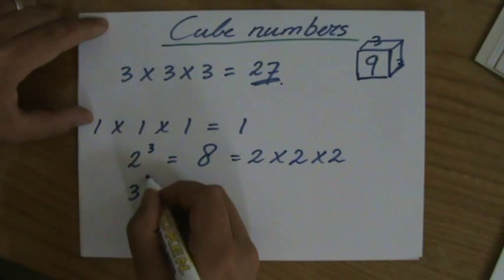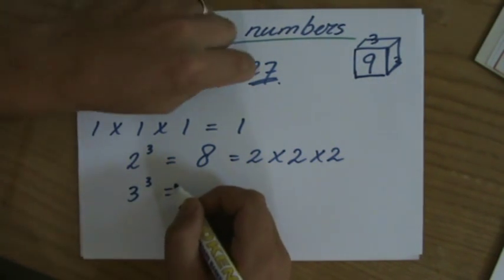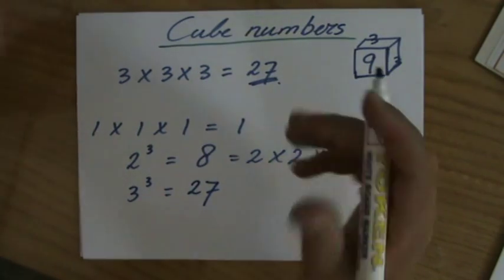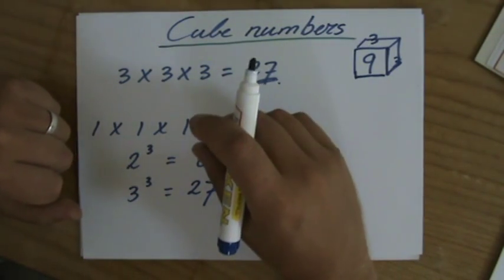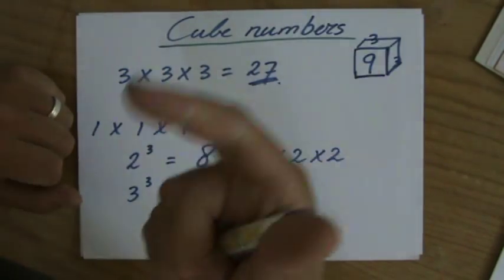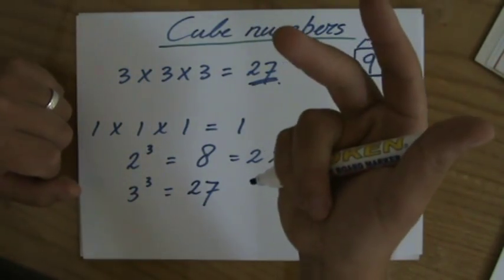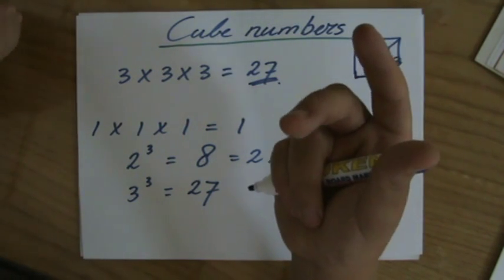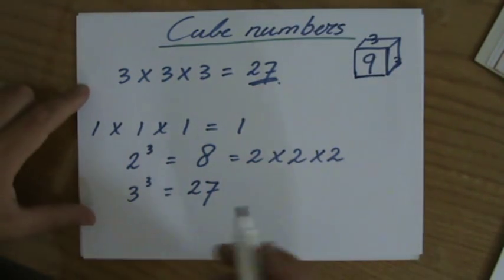Now 3 to the power of 3. That means 3 times 3 times 3. That's 27. And I still see students in year 12 who say it's 9, and it is just not very impressive.